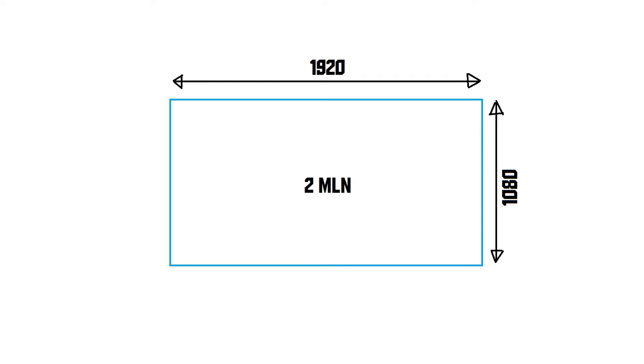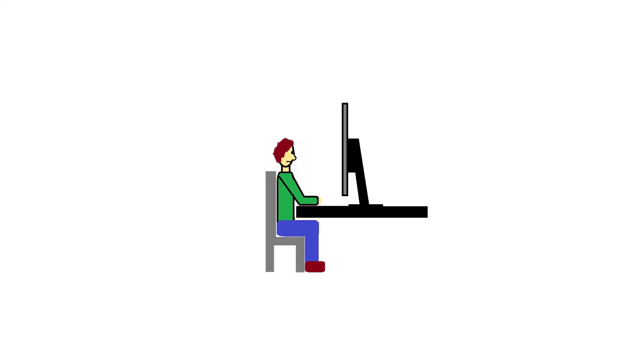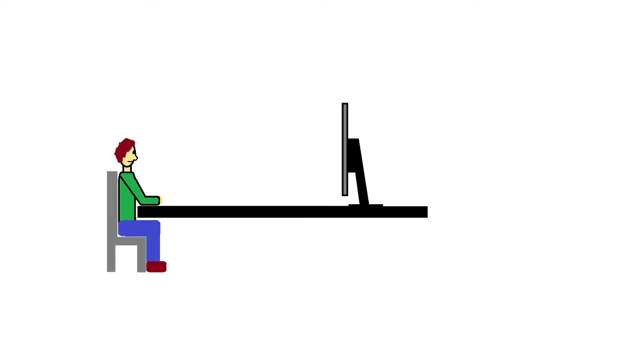Generally, a higher resolution means you can get better image quality, but there are a few twists to watch out for. First of all, the distance between you and the monitor is really important. When you're sitting really close to the screen, you can see the pixels, but when you're really far away, you can't — kind of like one of those old paintings that looks better when you're further away. So if you're someone who sits very far from their monitor, you probably don't need a very high resolution.